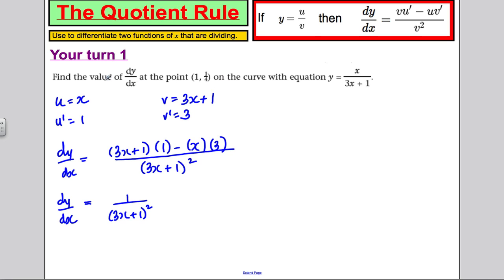It asks for us for the value of dy by dx at this place on the curve, namely where x is 1. Where x is 1 and y is a quarter, we can substitute in x is 1 into our gradient function. So dy by dx, where x is equal to 1, you just sub 1 in and you get 1 over 4 squared, which is 1 over 16, and you're done. And that's all there is to learn about the quotient rule.